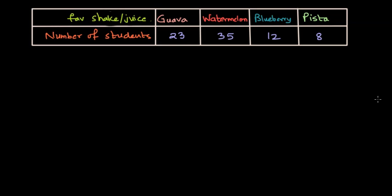So we have four juices or four types of drinks: guava, watermelon, blueberry, and pista. 23 students like guava, then 35 students like watermelon, 12 blueberry, and 8 pista. What we want to do is draw a bar graph compiling this very information.